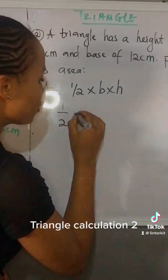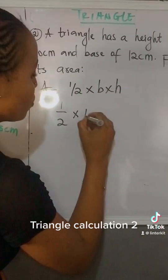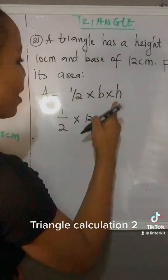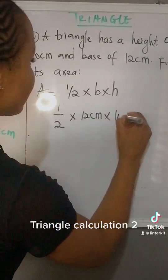So 1 over 2 times. What is my base? 12 cm. Please don't forget your unit. What is my height? 10 cm.